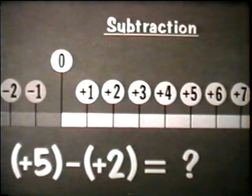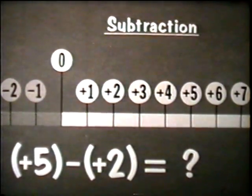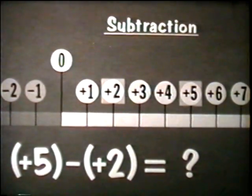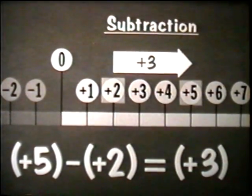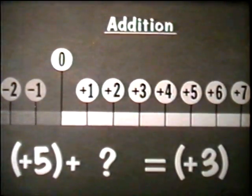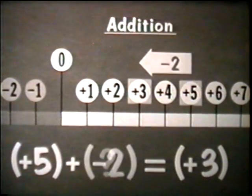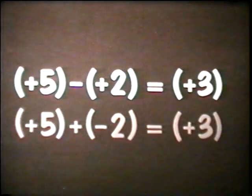Let's work this same subtraction problem using the number line. To find the difference between positive five and positive two, locate the numbers on the line, then count the number of units from positive two to positive five. The difference is three units in the positive direction — a positive three. Now let's find the difference between two numbers in a different way. What number, when added to positive five, gives the answer positive three? A negative two — two units in the negative direction. Subtracting a positive two produced the same result as adding a negative two.